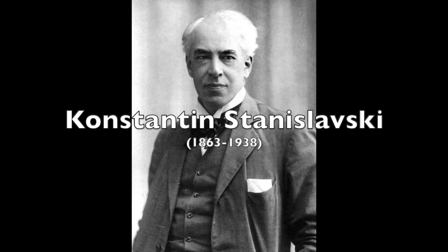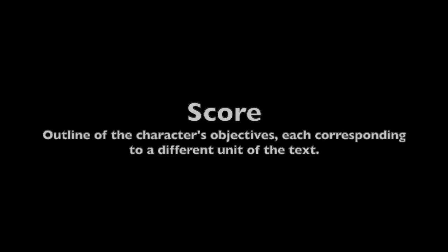Konstantin Stanislavski was a Russian actor and theater director. He developed a method of acting that draws on important information found in the text of the play. The Stanislavski process of scoring a role also highlights important dramatic turning points in the text. So we need to set up some terms here for our Stanislavski scoring. The score is an outline of the character's objectives, each corresponding to a specific unit of the text.